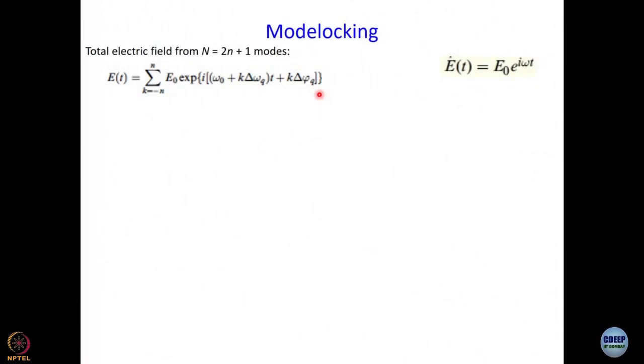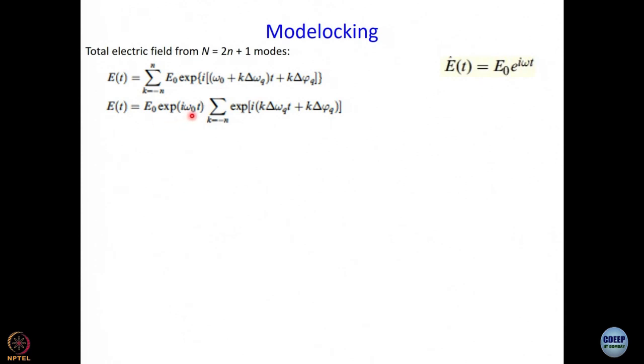We write the electric field as E₀ · e^(i(ω₀ + K·Δω_Q)t), where K varies from −n to +n. We also include K·Δφ_Q as a phase term, and that phase difference is independent of time — that is very important. Using e^(A+B) = e^A · e^B, I can take E₀ · e^(iω₀t) outside the summation, and inside I am left with the sum of e^(i(K·Δω_Q·t + K·Δφ_Q)).